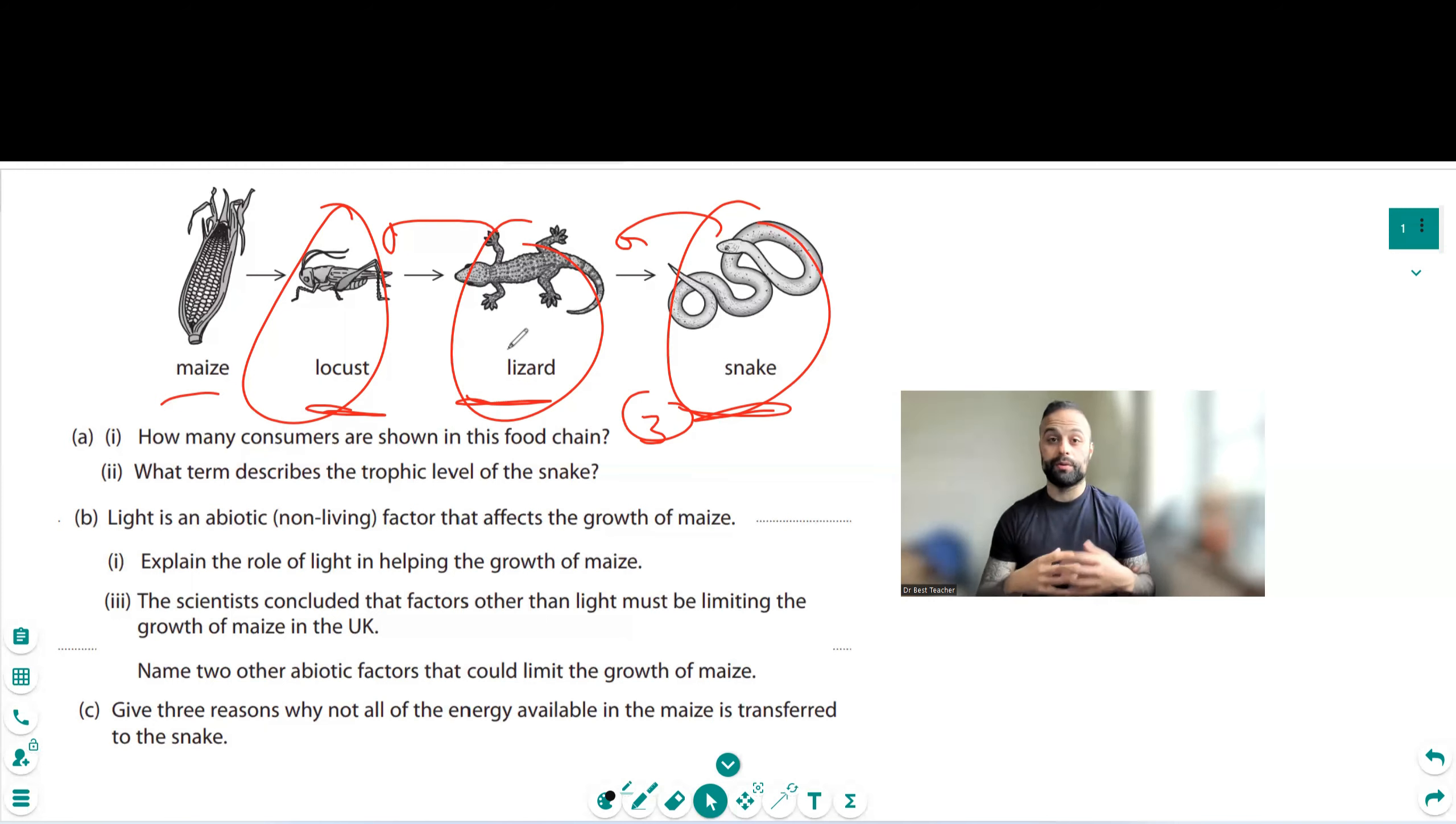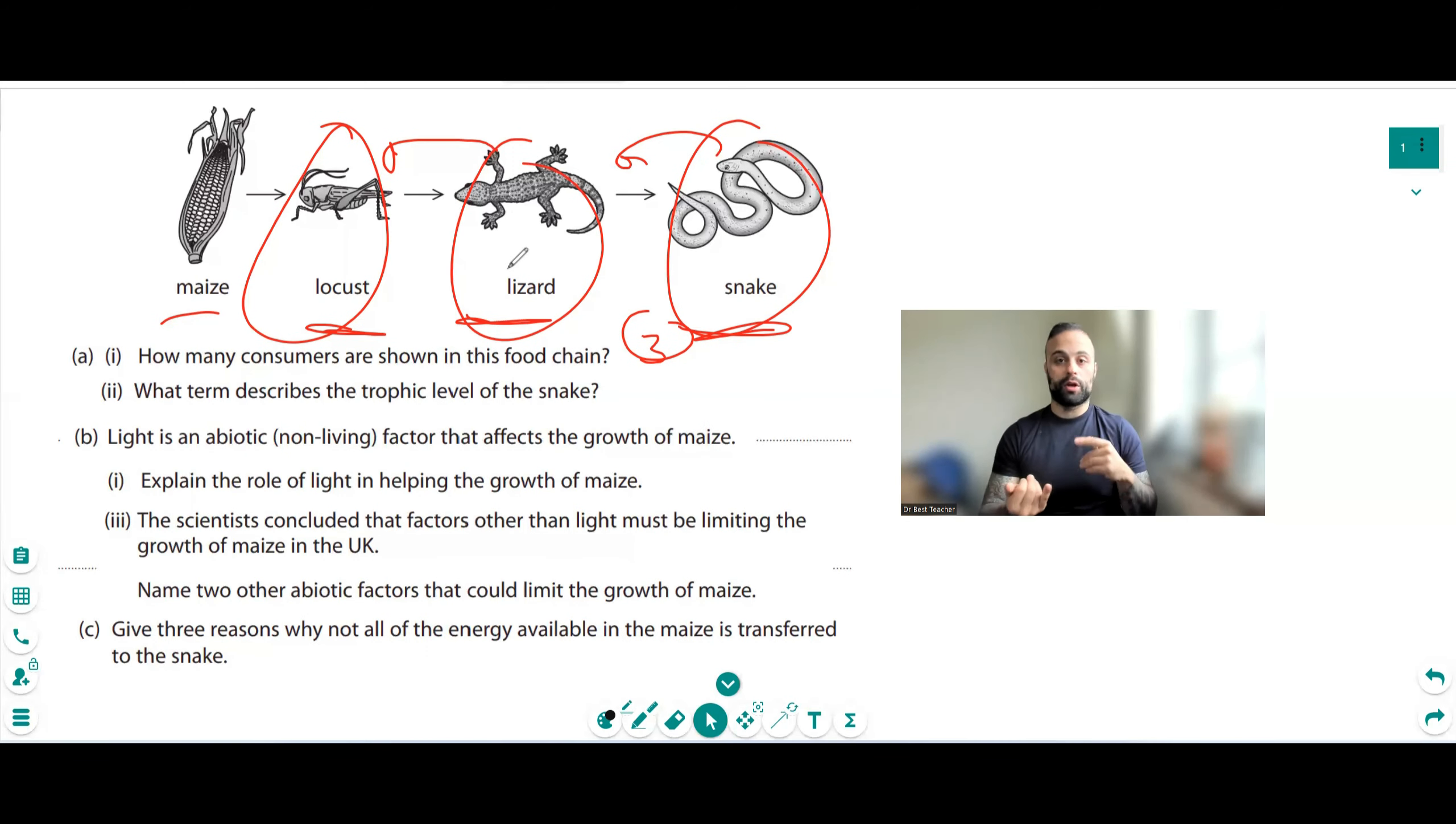Another thing would be the amount of water there is because water is needed for photosynthesis or you could even say moisture in the air, humidity. And the last point is the minerals. Is it getting enough magnesium to create the chlorophyll? There's a bunch of other minerals that are needed.